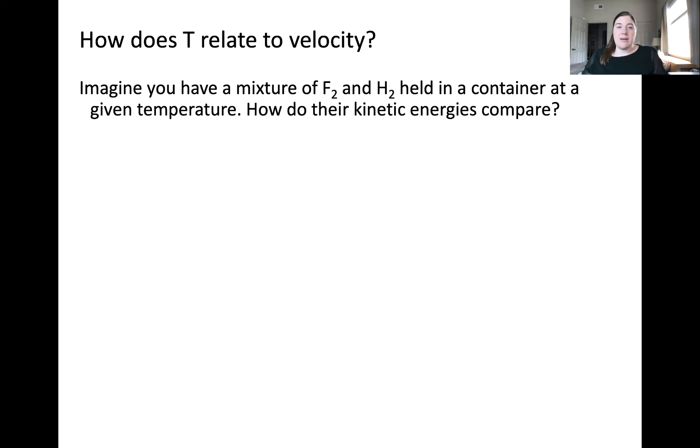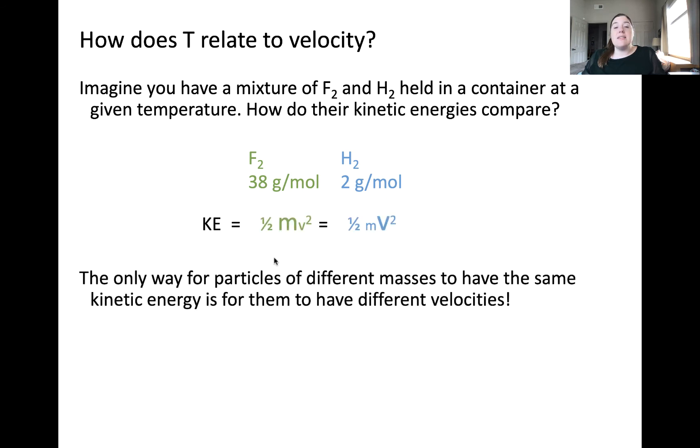One of the key assumptions in kinetic molecular theory is that kinetic energy only depends on temperature. Let's imagine a mixture of fluorine and hydrogen held in a container with a given temperature. How do the kinetic energies of the fluorine molecules compare to the hydrogen molecules? If the gas temperatures of the fluorine and hydrogen gases are equal, therefore their kinetic energies must also be equal. We know that the molar mass of hydrogen is much smaller than the molar mass of fluorine. Since kinetic energy is equal to one half mv squared, that implies that these different gas molecules in the mixture must have different velocities.